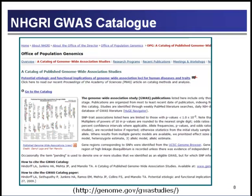For those interested, the NHGRI GWAS catalog is curated by my colleagues in the Office of Population Genomics — Dr. Lucy Hindorff, Heather Junkins, and Terry Manolio. The catalog is a database of all published genome-wide association studies. As of today, there are 471 publications. For each publication, there's a display of the SNPs identified, the gene region, effect size and p-values, and the genotyping platform used. You can download all the data into an Excel file, and learn more at genome.gov GWA studies.